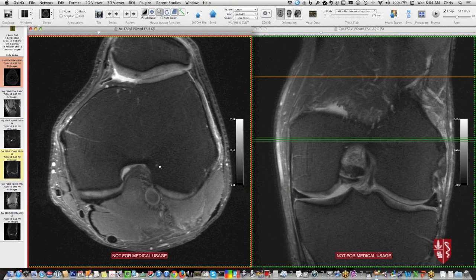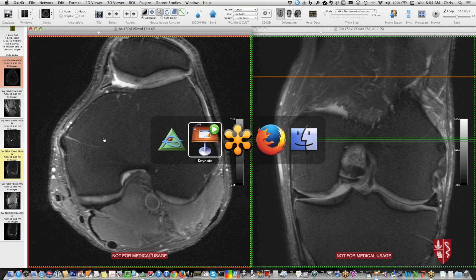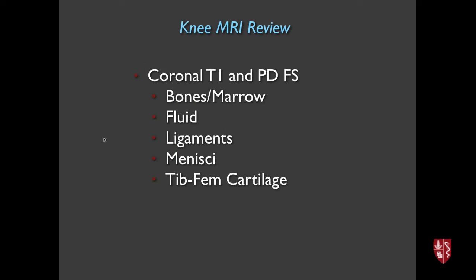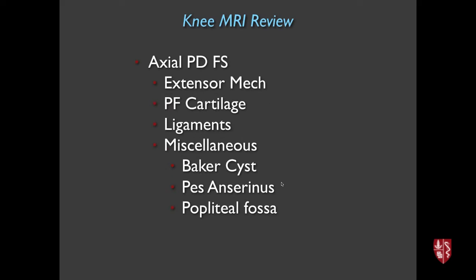To summarize: that's about 30 minutes of explanation that in practice should only take about two minutes if you're systematic. On coronal images: bone marrow, fluid, ligaments, menisci, and compartmental cartilage. On sagittal: reinforce the compartments, recheck cruciates, lateral compartment, extensor mechanism, and patellofemoral joint. On axials: refine the extensor and patellofemoral articulation, recheck ligaments, and check miscellaneous structures.